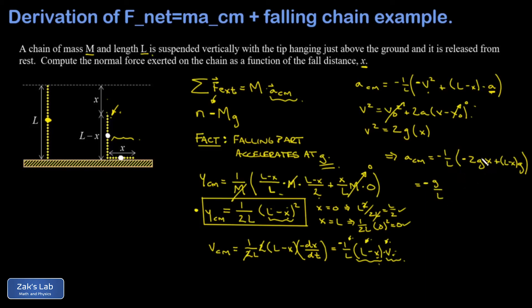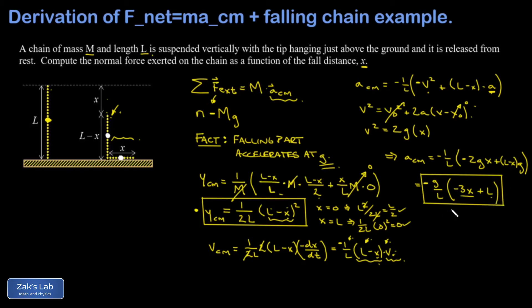Substituting v² = 2gx into the expression: a_cm = -(g/l)[l - 2x - x] = -(g/l)(l - 3x). As a sanity check: when x = 0 the whole chain is momentarily in free fall, so a_cm should be -g. Plugging in x = 0 gives -(g/l)(l) = -g. ✓ The formula is doing what it's supposed to do.